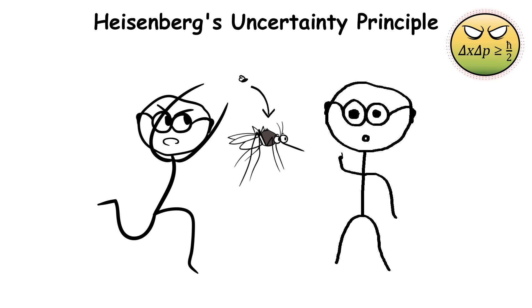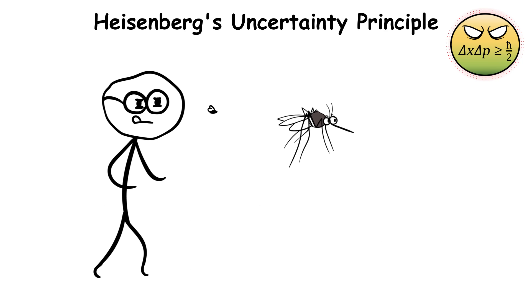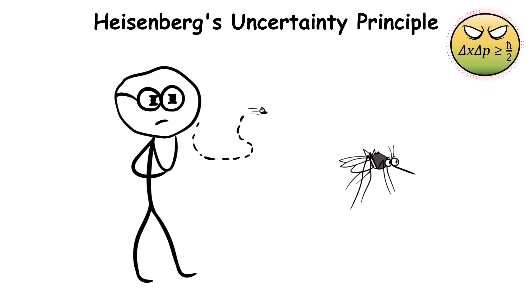Heisenberg's uncertainty principle. You're in a scenario where you're trying to catch a mosquito that has been bugging you for a while. The more you focus on its position, the less you know how fast it is. Similarly, if you focus on its speed, you won't be able to observe its exact position.